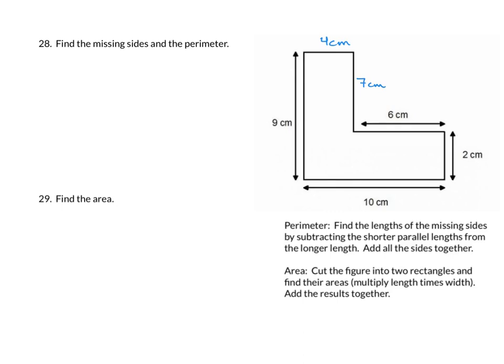So now if we go ahead and add up all of our sides, we get 4 plus 7 plus 6 plus 2 plus 10 plus 9.